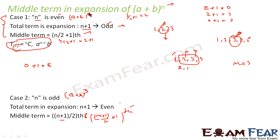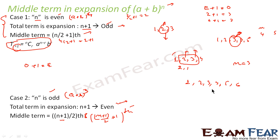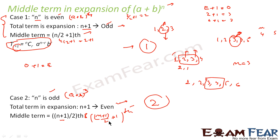To summarize: when n is even, the total number of terms is odd, and we get only one middle term — the (n/2 + 1)th term. When n is odd, the total number of terms is even, and we get two middle terms: the (n+1)/2 th and the (n+1)/2 + 1 th term.